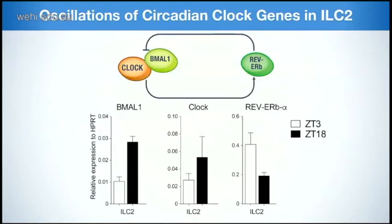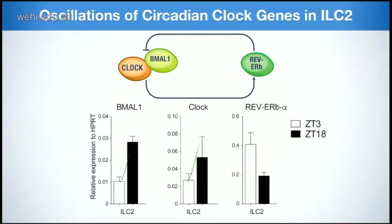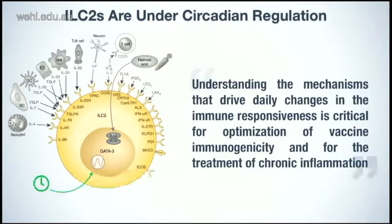The next thing was to understand if ILC2 have the molecular machinery to mediate a circadian regulation, as this is currently absolutely not known for different immune cell types. I purified ILC2 from the lung and analyzed the expression of important clock genes: CLOCK, BMAL1, and REV-ERBα. These genes actually oscillate — if you draw this oscillation, REV-ERBα shows exactly the opposite pattern, as expected. We clearly see expression of a functional clock in ILC2. This is another level of physiological regulation — ILCs appear to be governed by circadian rhythm.